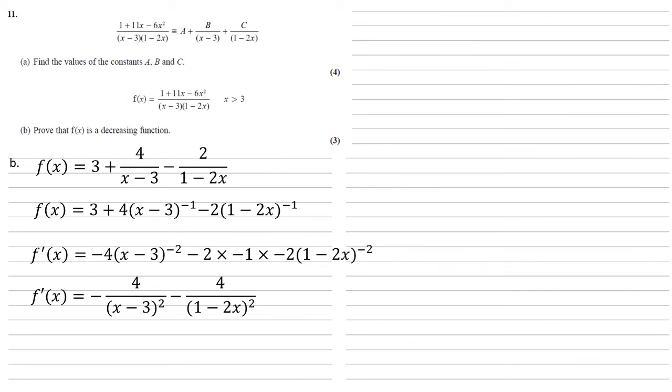Simplifying this, putting it back as a fraction gives us -4/(x - 3)² - 4/(1 - 2x)². Now the denominators here are both squares so we know they're both larger than 0.